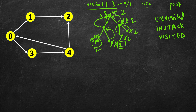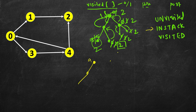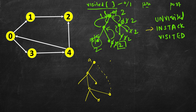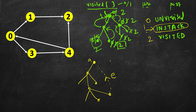While doing DFS, if we find an edge going to a node that is still in the recursion stack, that indicates a cycle. So we check the state of adjacent nodes: if a node's state is 1 (in stack), we return true — there is a cycle.